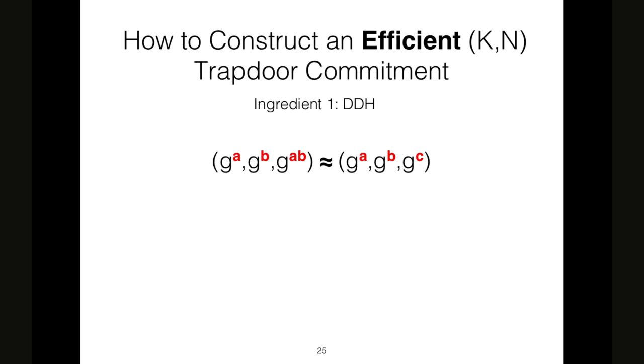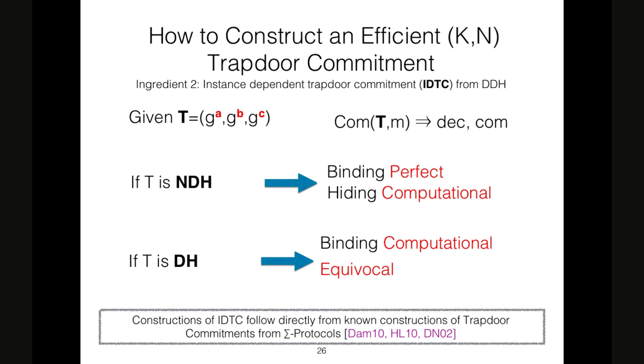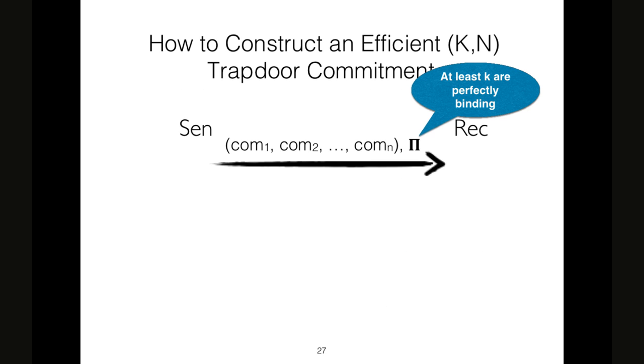But how can we construct an efficient (K,N) trapdoor commitment? As a first ingredient, we use the decisional Diffie-Hellman assumption. I will refer to this type of tuple as DH tuple and to this type of tuple as non-DH tuple. We also, as a second ingredient, use an instance-dependent trapdoor commitment. That is a commitment where if the tuple used to compute the commitment is non-DH, we obtain a perfect binding and computationally hiding commitment. And if the tuple T is DH, we obtain a computationally binding and an equivocable commitment.